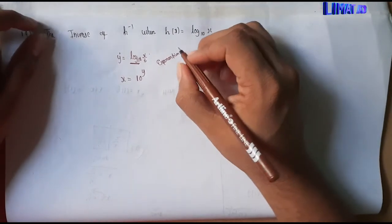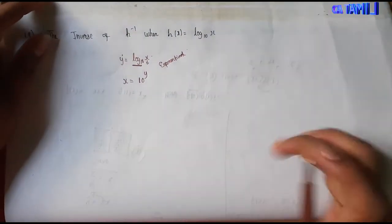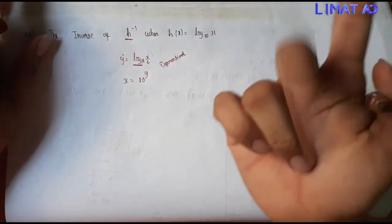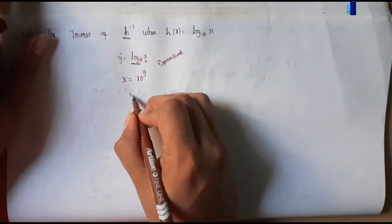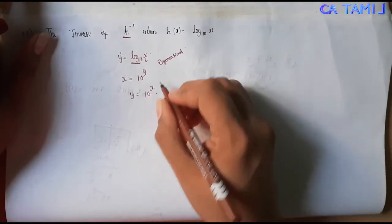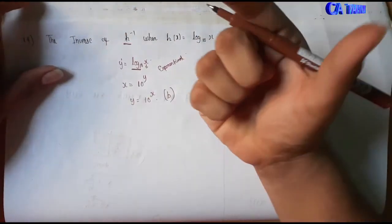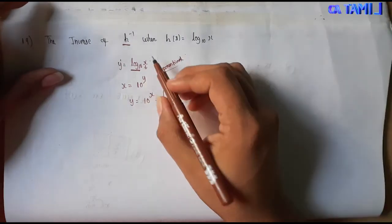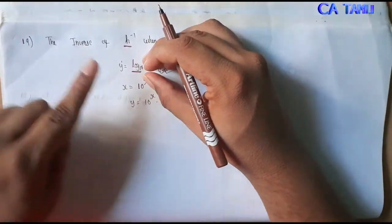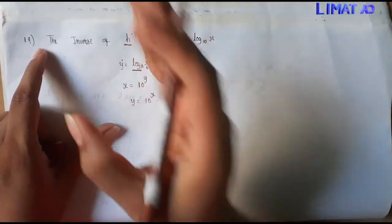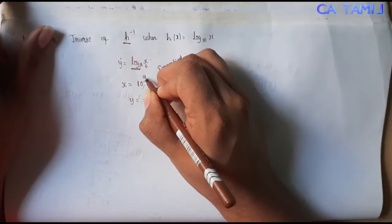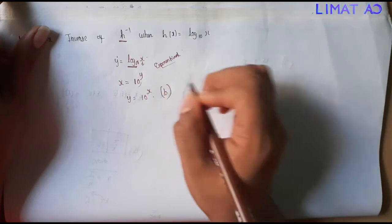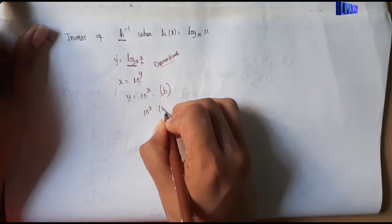This is the exponential form. So finally, the inverse function swaps x and y. So h inverse of x is y equals 10 to the power x. The concept used is exponential: log base 10 of x equals y means 10 power x equals y. So x remains and the inverse gives y equals 10 to the power x. That is the final answer — option B.